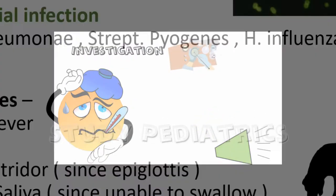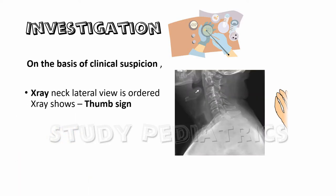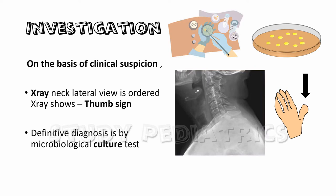Let's see how to investigate it. Diagnosis is mainly on clinical grounds and indirect laryngoscopy is generally avoided since the epiglottis is already inflamed and any further irritation may cause choking. Hence, after stabilization of the child and on the basis of clinical suspicion, we may order an X-ray. X-ray neck lateral view shows the thumb sign, where the X-ray looks as if somebody is poking their thumb into the neck. Definitive diagnosis is by microbiological culture test.